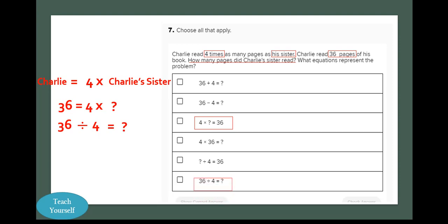And that is also equivalent to the last option we have here: 36 divided by four equals unknown. In both cases, we're going to have the unknown give us nine.